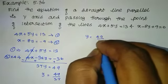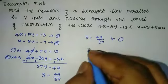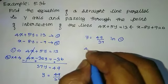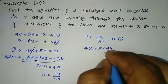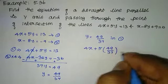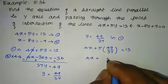Substitute y equal to 49 by 37 into equation 1. So 4x plus 5 into 49 by 37 equal to 13.